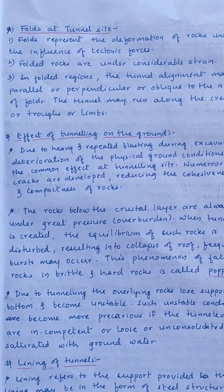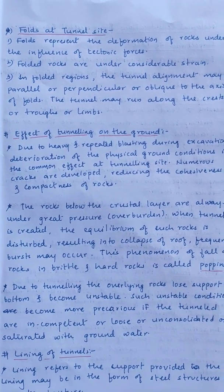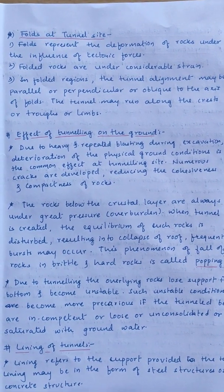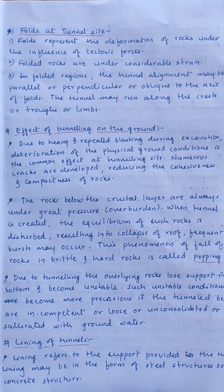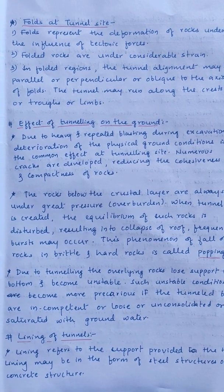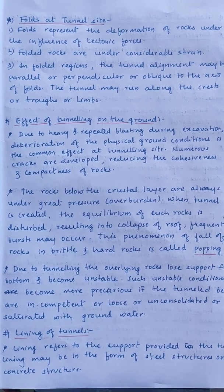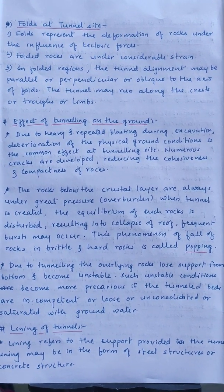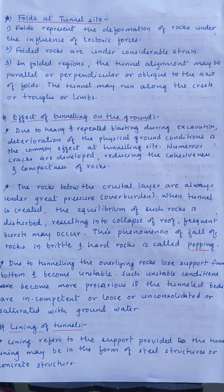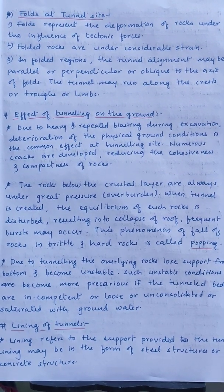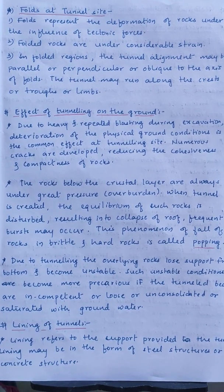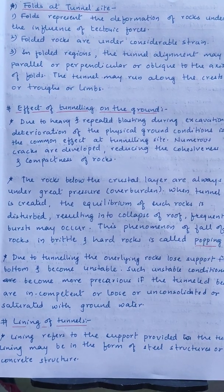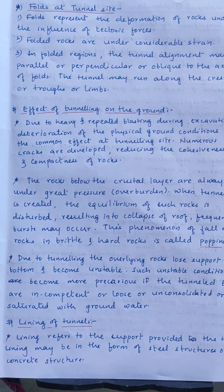The next geological consideration is folds at the tunnel site. Folds represent the deformation of rocks under the influence of tectonic forces, and folded rocks are under considerable strain. In folded regions, the tunnel alignment may be parallel, perpendicular, or oblique to the axis of the folds, and the tunnel may run along the crests, troughs, or limbs of a fold.